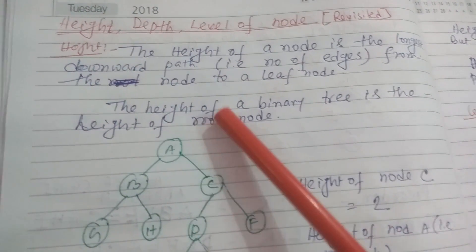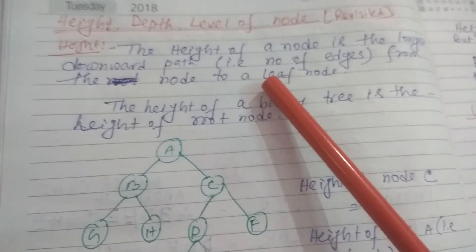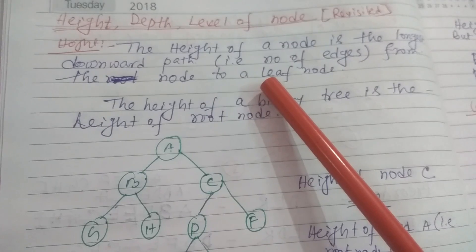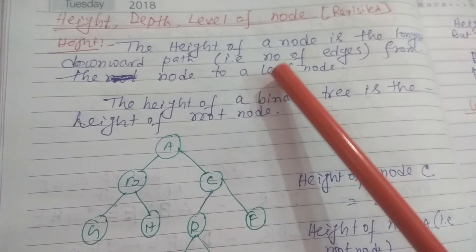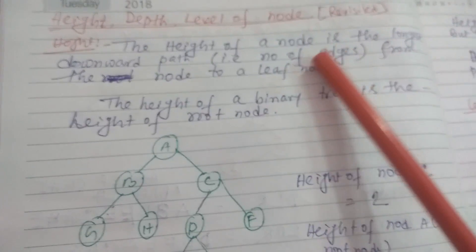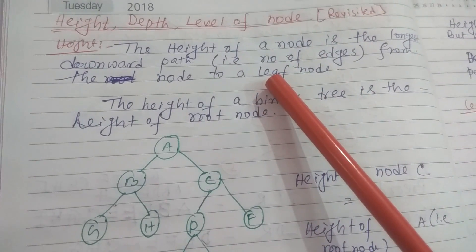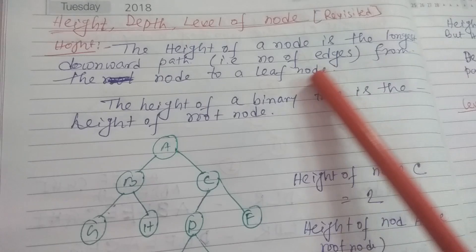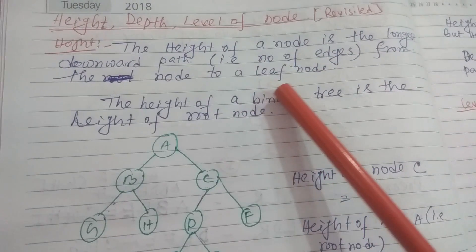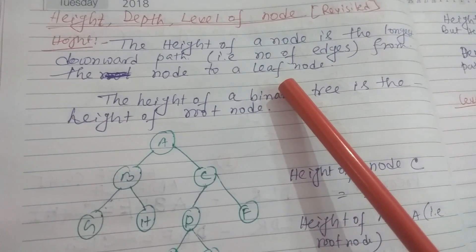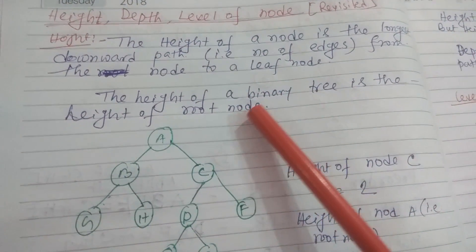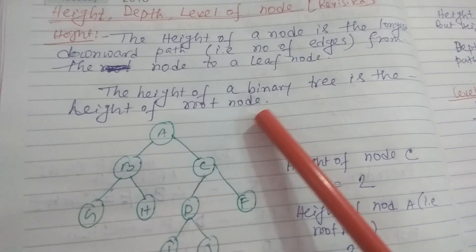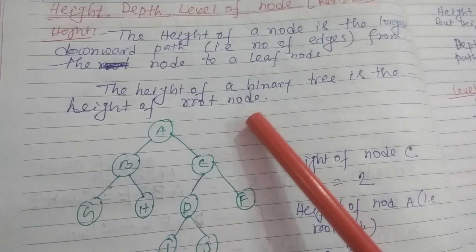Today we again explain height, depth, and level of a node. The height of a node is the longest downward path — that is, the number of edges from the node to a leaf node. The height of a binary tree is the height of its root node.